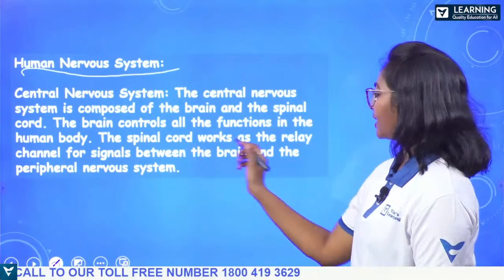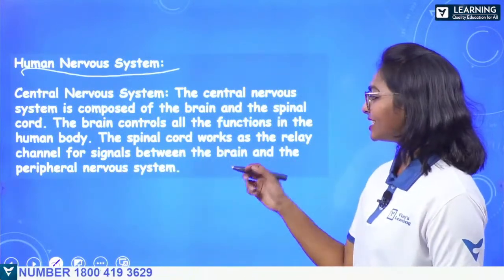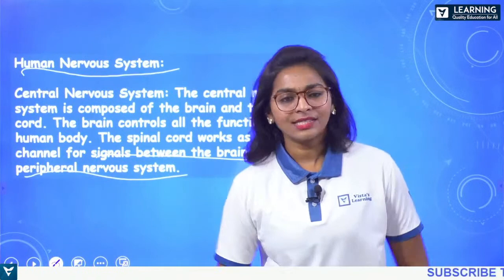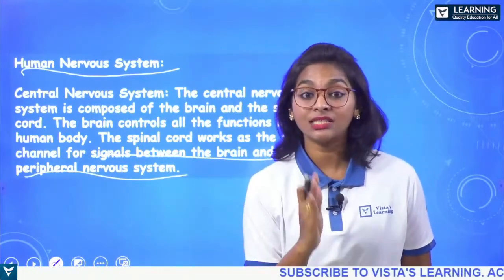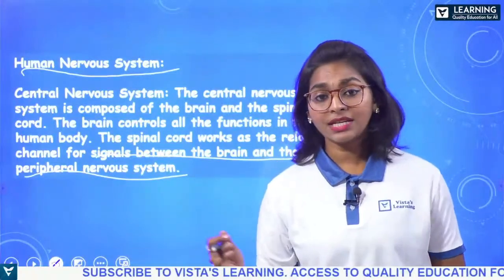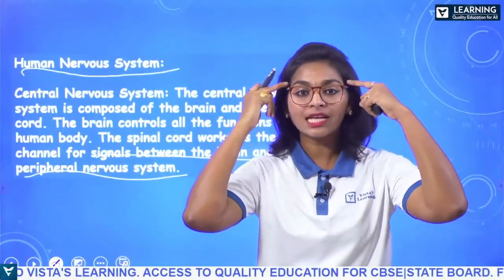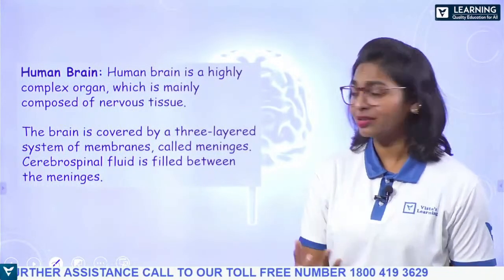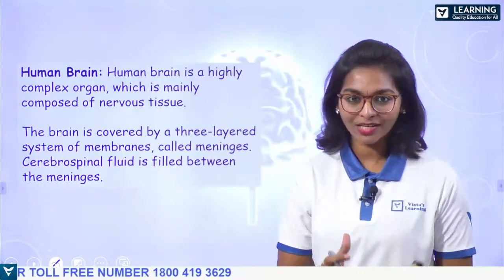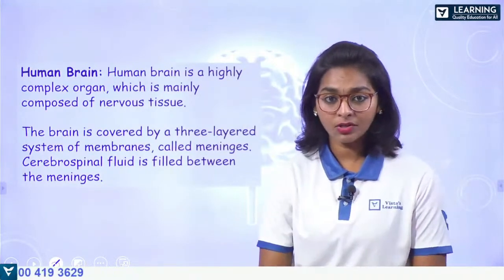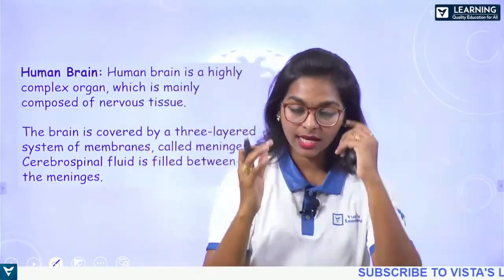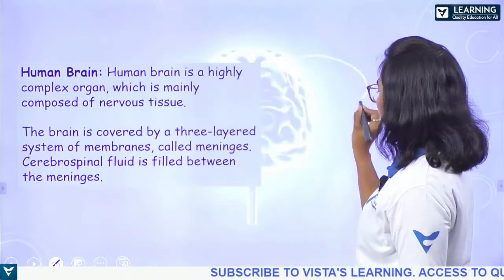The central nervous system is composed of the brain and spinal cord. It controls the functions of the human body. The spinal cord works as a relay channel for signals between the brain and the peripheral nervous system. The brain is the main central processing unit for humans. It is a highly complex, very soft organ, safely present inside the skull.